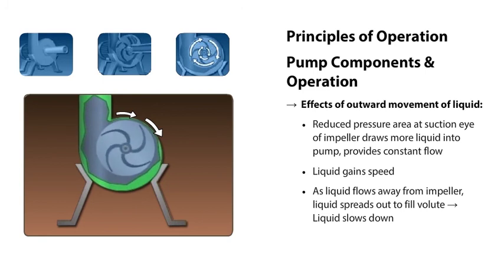As the liquid flows away from the impeller, it spreads out to fill the volute. The expansion in the volute causes the liquid to slow down.